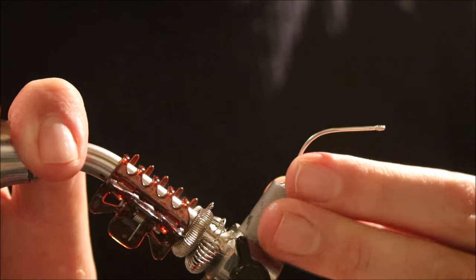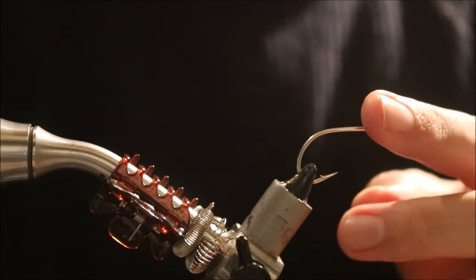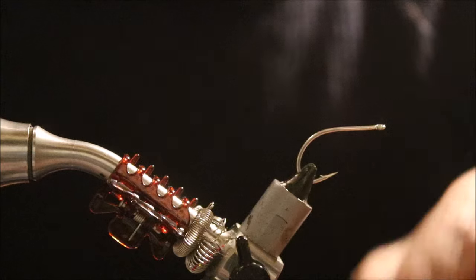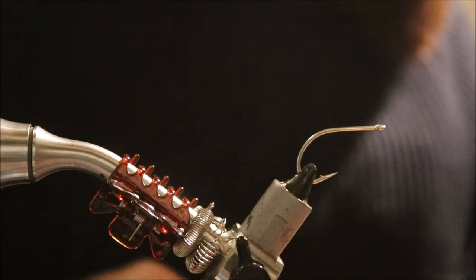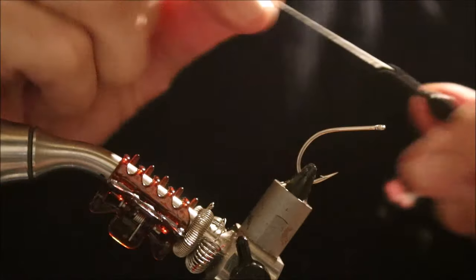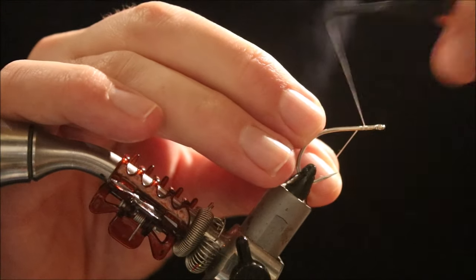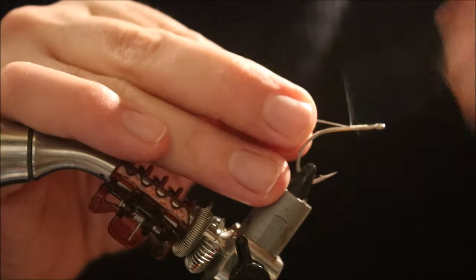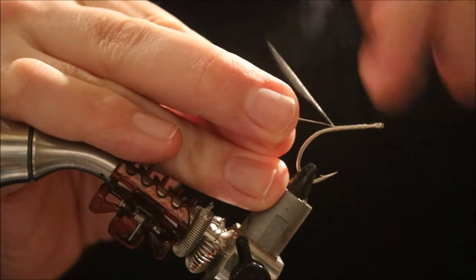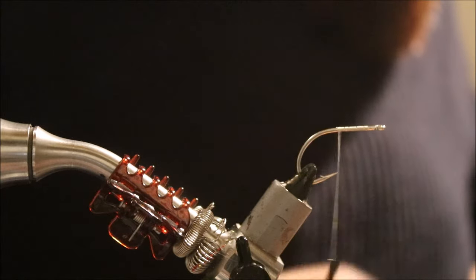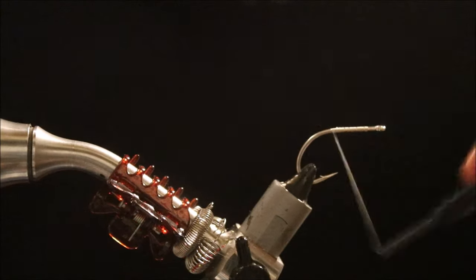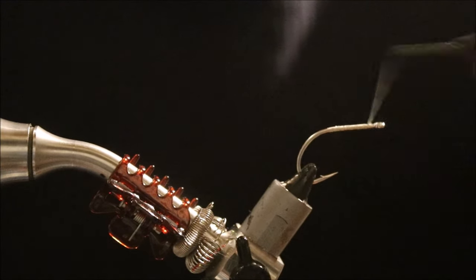So the hook I've got in the vise is a Gamakatsu SC15, this is a 1/0. Obviously you can change the hook to suit yourself where you're fishing. I'm just using some Tan Danville's Flat Wax Nylon, running on a short base along the straight part of the shank.